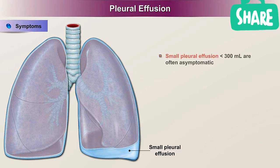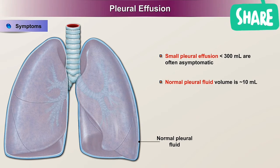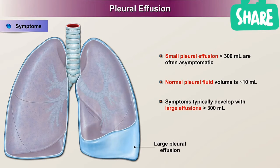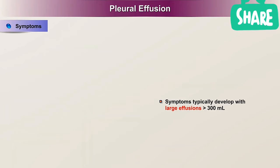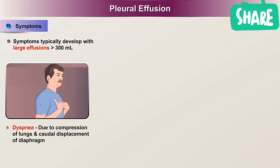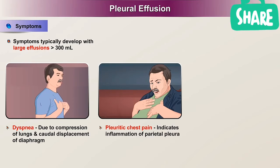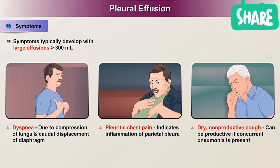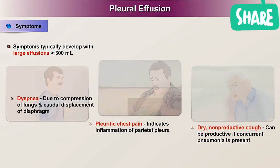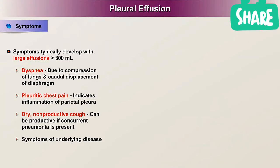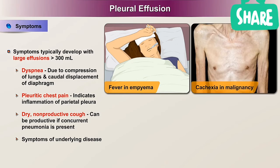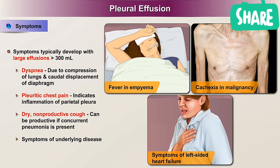Symptoms: patients with a small pleural effusion, less than 300 ml, are often asymptomatic; the normal pleural fluid volume is approximately 10 ml. Symptoms typically only develop with large, more than 300 ml, effusions. The characteristic symptoms are dyspnea due to compression of the lungs and caudal displacement of the diaphragm, pleuritic chest pain indicating inflammation of the parietal pleura, dry non-productive cough (which can be productive if concurrent pneumonia is present), fever in empyema, cachexia in cases of malignancy, and symptoms of left-sided heart failure.